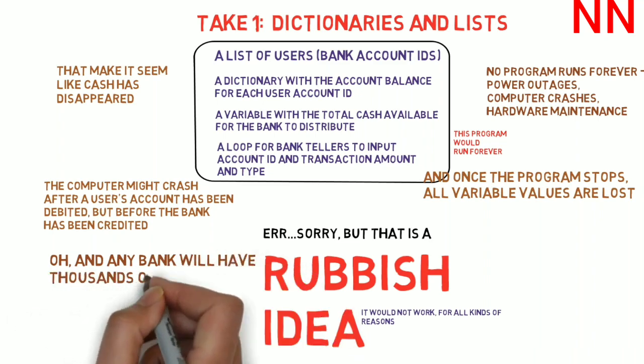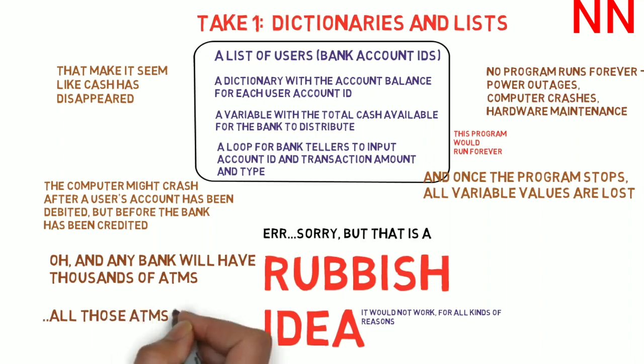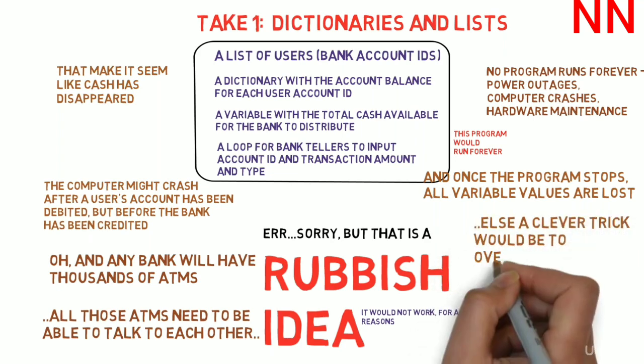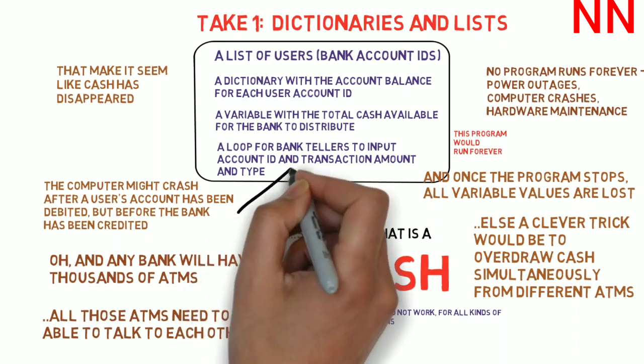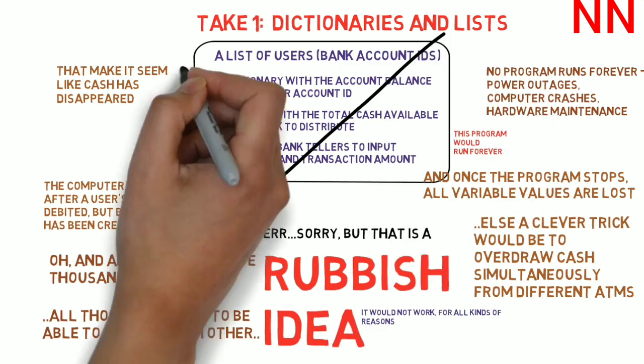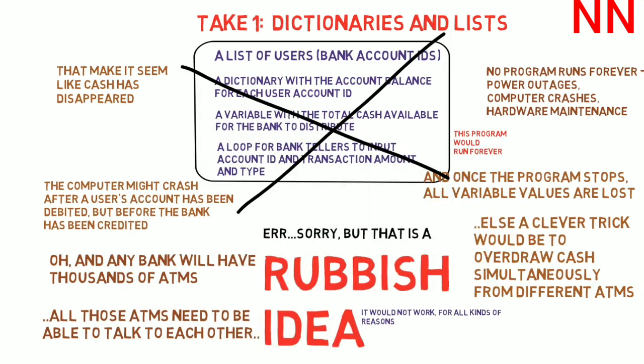Oh, and any bank will have thousands of ATMs, not just one. And all of these will have to talk to each other and maintain the balances correctly. Otherwise, a clever trick would be to withdraw for the same account from several different ATMs simultaneously. So, if you withdraw cash several times from different ATMs and they weren't able to talk to each other, you could overdraw the same amount of cash that you have in your account multiple times and no one would be able to catch you. So, for all these reasons, using dictionaries and lists to implement a bank ATM is just not a workable idea.